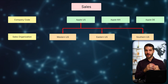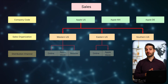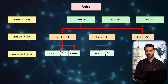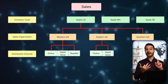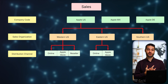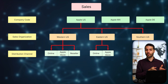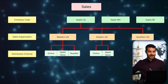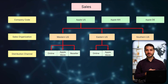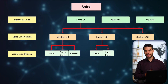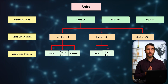From Western US sales organization, we move down to distribution channel — the way you will be selling and distributing your products. For Apple, let's say they have their online store, physical retail locations, and products sold to resellers. Those are our three distribution channels. Each sales organization has its own distribution channels, and they might not all be identical — for example, Eastern US might never sell to resellers, so it would be missing that distribution channel.